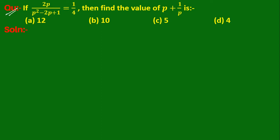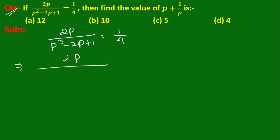Given that 2p upon p squared minus 2p plus 1 equals 1 upon 4, find the value of p plus 1 upon p. We take p as a common from the denominator, so we get p minus 2 plus 1 upon p equal to 1 upon 4.